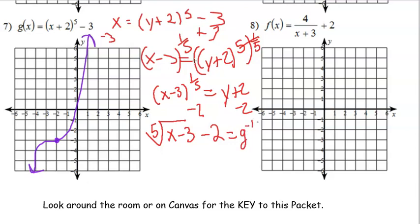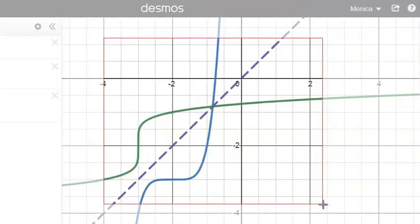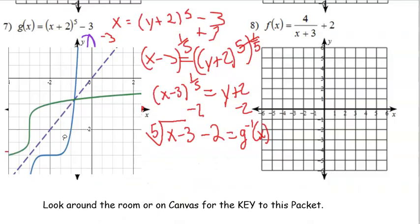And then we could graph that as well. So we have 3, 2. And then it should be symmetric with this line. I'll go ahead and graph it with Desmos to have a clear line here. Here's what the graph should look like. Notice that it is symmetrical with the line y equals x. For all inverses, they should be symmetric with this line.